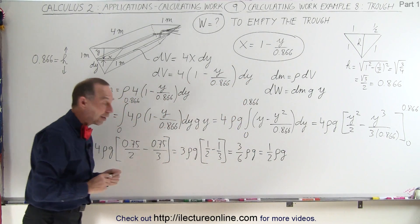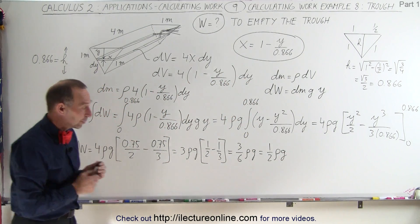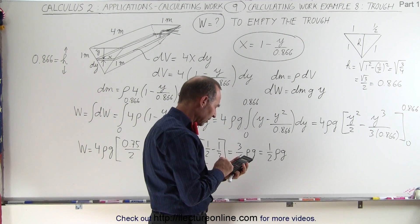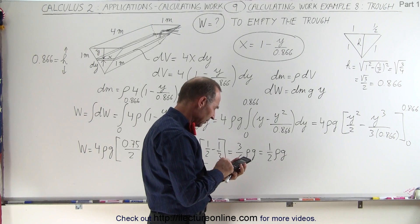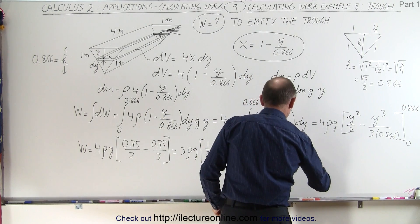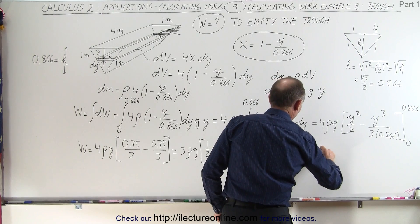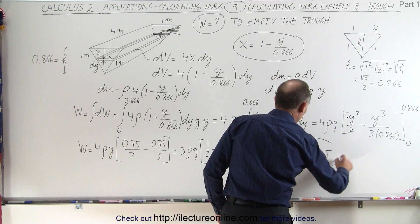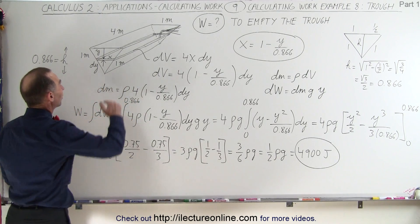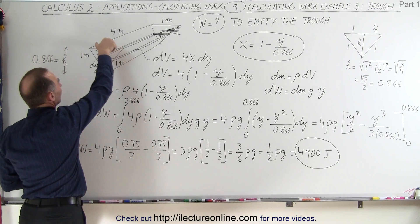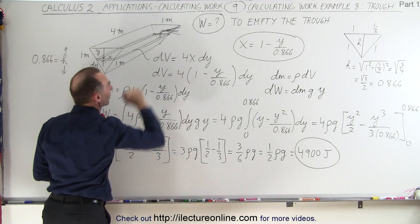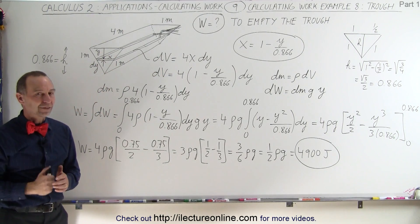And let's now go ahead and calculate what that's equal to. So we have 1,000 times 9.8 divided by 2, we get 4,900. And the units are joules. And so that's how much work it will take to take all of the water out of a full trough, when it's filled to the brim, 1 meter at the top, 0.866 meters high, and 4 meters long. And that's how it's done.